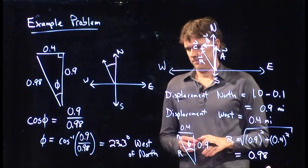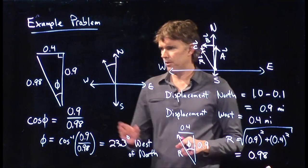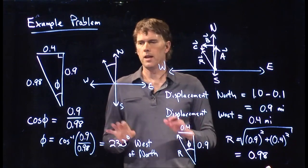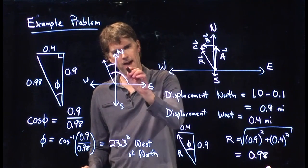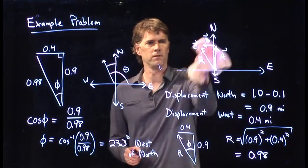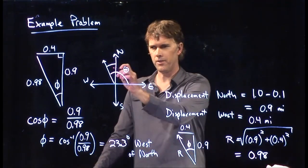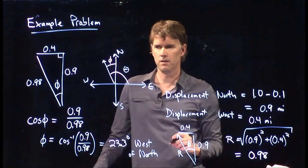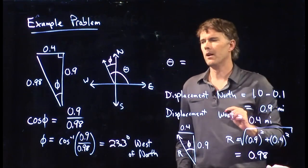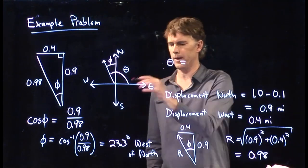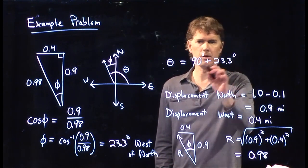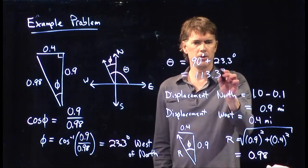A student asks: should we find theta instead of phi? Well, we can describe the angle however we want — phi written as 23.3 degrees west of north is plenty descriptive. If you wanted theta, what would it be? We have to go 90 degrees to get to west and then add 23.3 degrees, so theta would be 90 plus 23.3 equals 113.3 degrees.